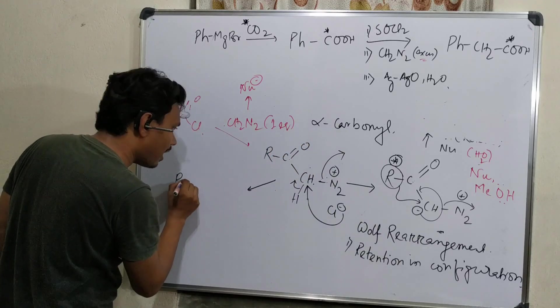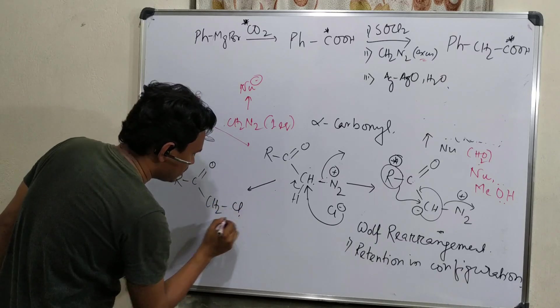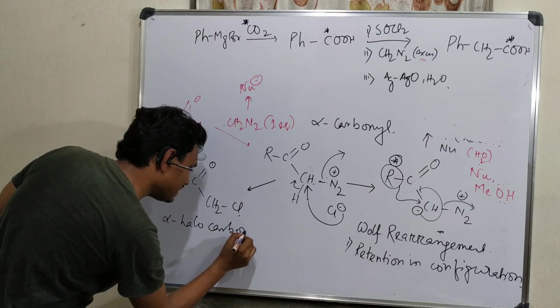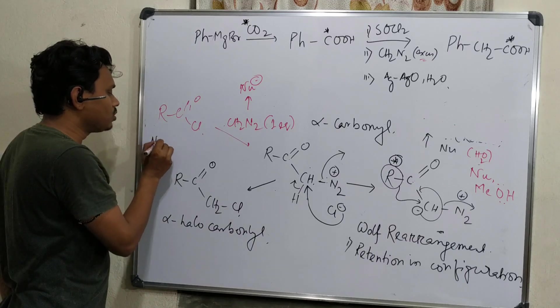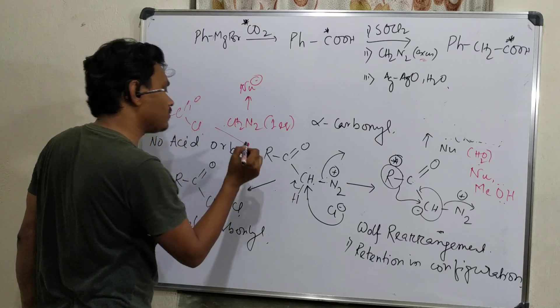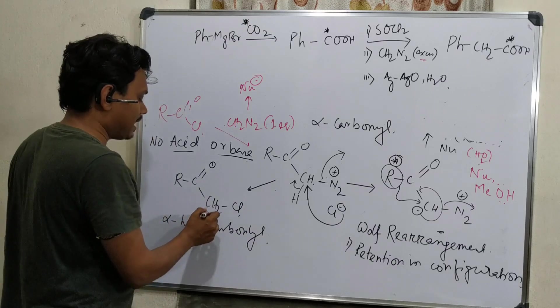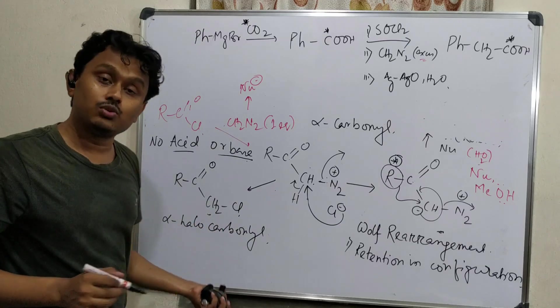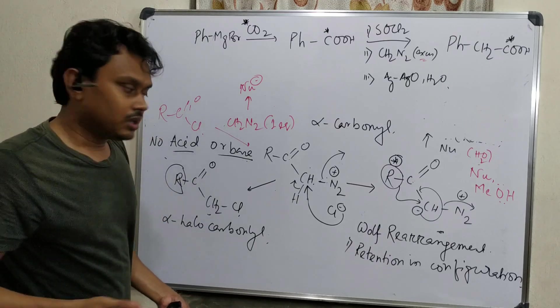So right now, what will happen? Chloride will attack. Since it's a bad nucleophile but leaving group is good, what will be the product? RCOCH2Cl. This is alpha-haloketone. So this is another method. Instead of no acid or base mediated alpha halogenation of carbonyl, we know base results in tri-alkylation, complete halogenation, and acid results in monohalogenation. But instead of acid, this is a good alternative if these are containing acid-sensitive groups.